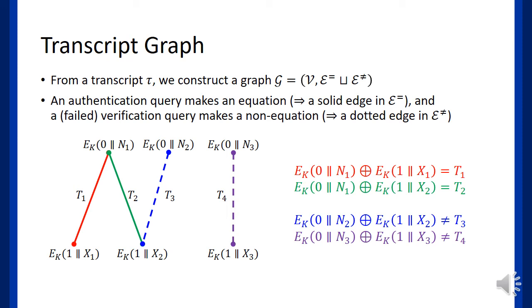To easily represent the system, we visualize the system by a transcript graph G. Each unknown in the system becomes a vertex, and each equation and non-equation becomes an edge. More precisely, authentication queries are represented by solid edges, and verification queries are represented by dashed edges. Note that if there are faulty nonces or hash collisions, edges tend to be connected to each other. The figure shows the example of a transcript graph which represents two authentication queries and two verification queries.